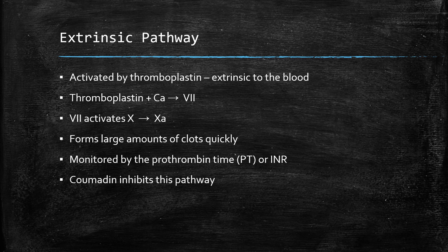The extrinsic pathway is so named because it's activated by tissue thromboplastins — substances that are extrinsic, or not normally found in the blood. Tissue thromboplastins are released by damaged cells and, in the presence of calcium, activate factor VII. Activated factor VII in turn can activate factor X. Since there's only one factor in this pathway, the extrinsic pathway is able to form large amounts of clot very quickly. We monitor the activity of this pathway via the prothrombin time or INR. Coumadin is a common anticoagulant that functions by inhibiting this pathway.